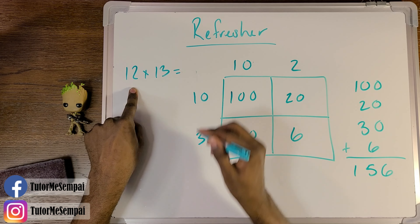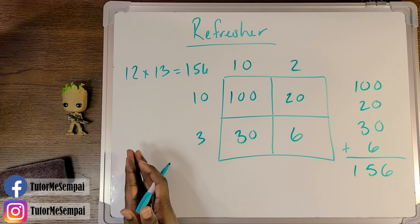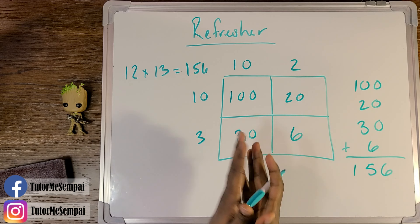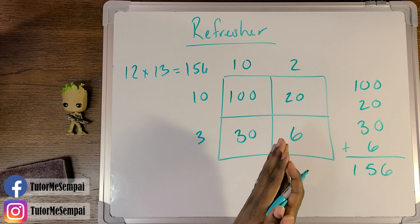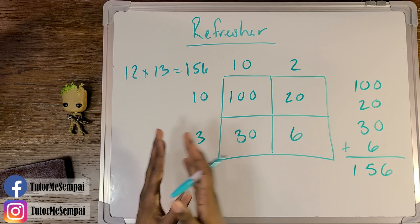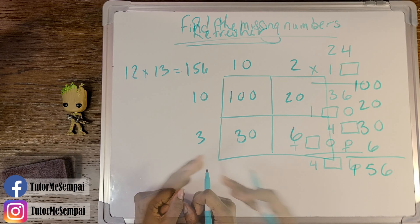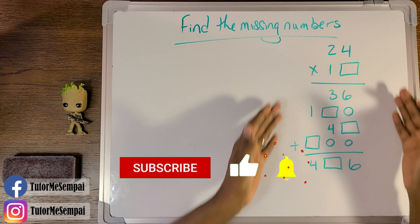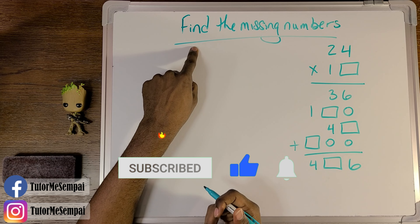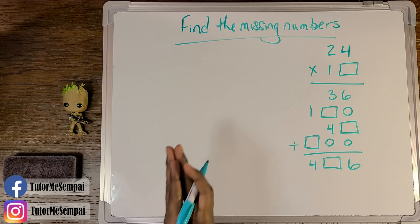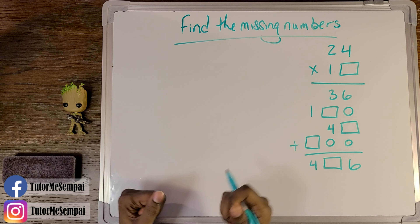So 12 times 13 is going to be 156, and this is how you do Area Model Multiplication. Once you understand how to use your area model for multiplication, you'll be able to multiply any two numbers. However, what if there's another use for your area model that is not as straightforward as multiplying two numbers? What if you were given a question that just asked you to find the missing numbers? Would you believe me if I said it's going to be super easy to do that using your area model for multiplication?